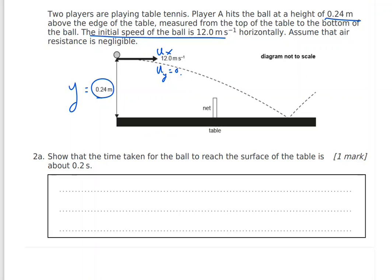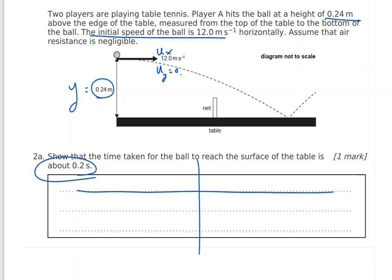Assume air resistance is negligible. Show that the time taken for the ball to reach the surface of the table is 0.2 seconds. When we have projectile motion, we analyze it into horizontal and vertical components — x-direction and y-direction.